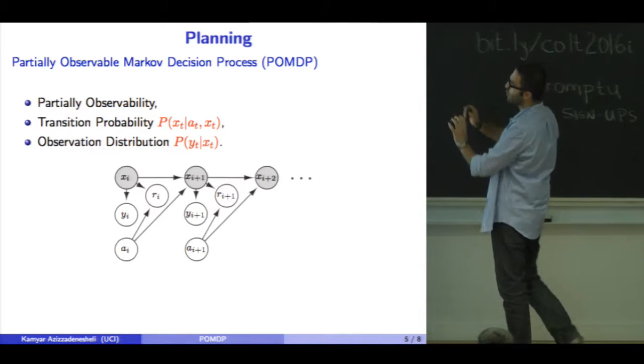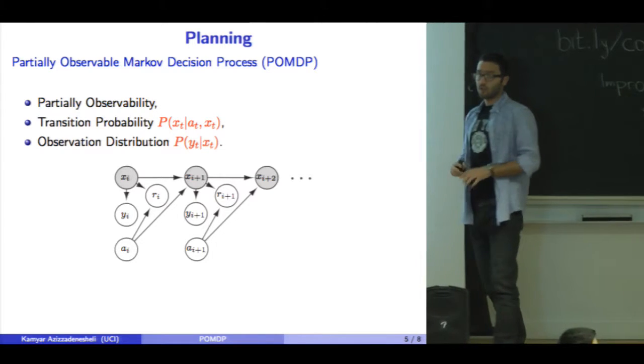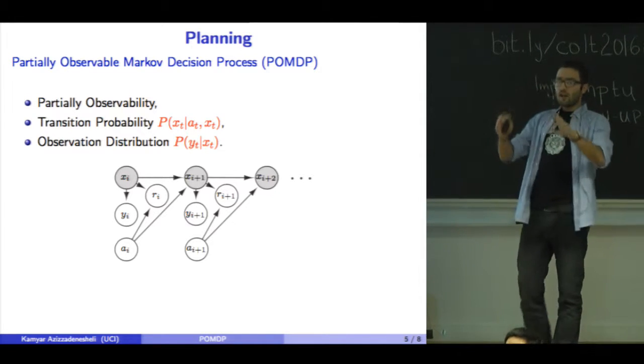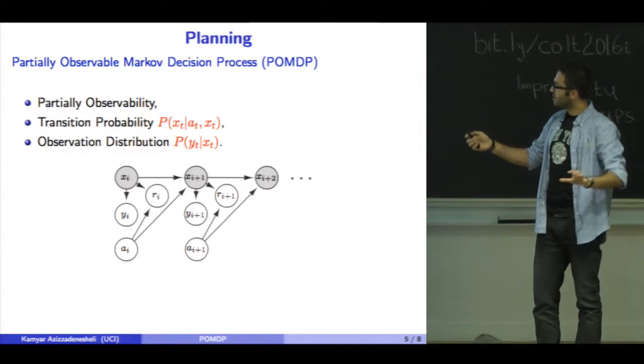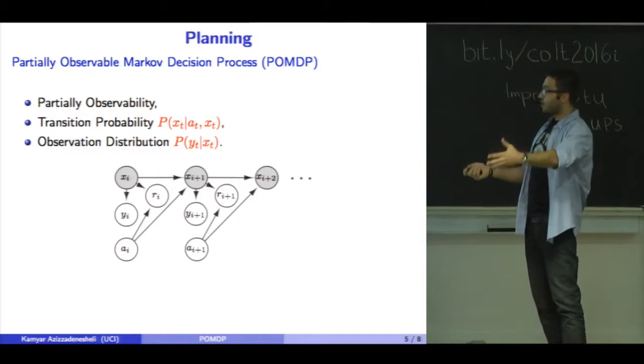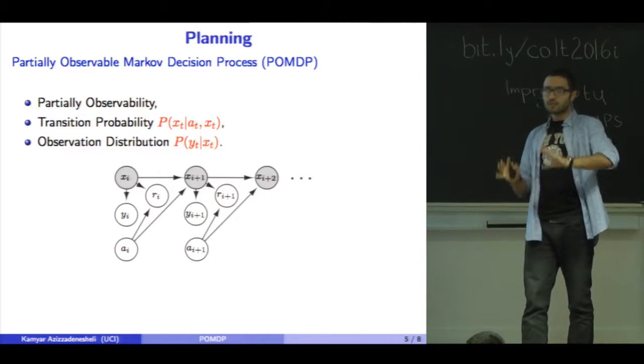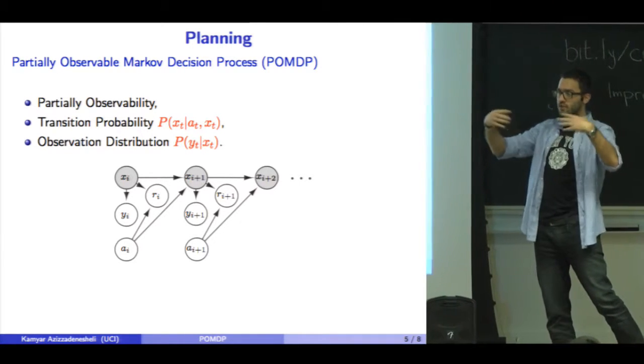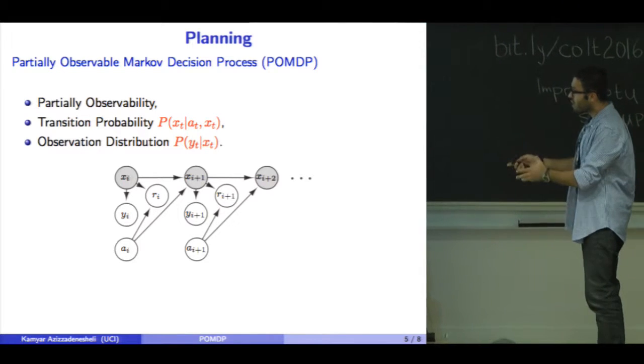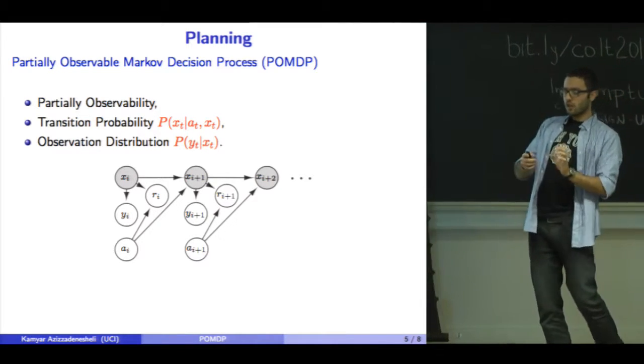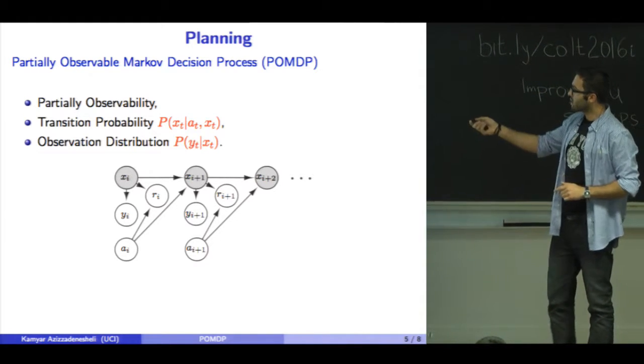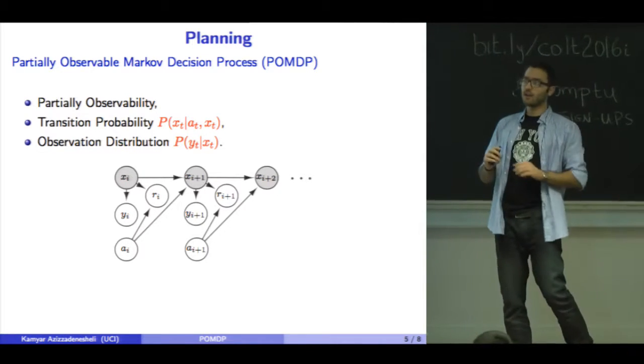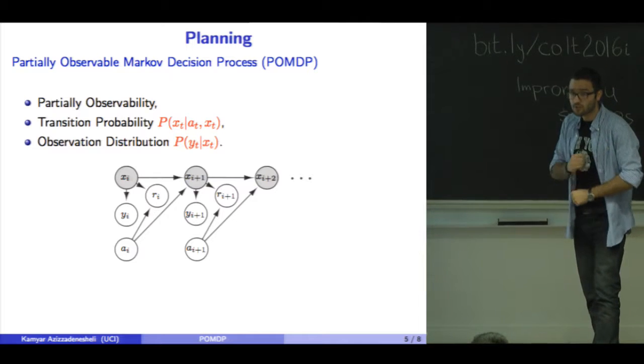What about a more complicated, realistic model—partially observable Markov decision processes (POMDPs)? At each time step, the environment is in a hidden state we cannot observe. We choose an action, transition to a new hidden state, and receive reward and observation. This problem is not well-studied compared to MDPs because of the hidden structure. Learning was hard with no efficient algorithms.